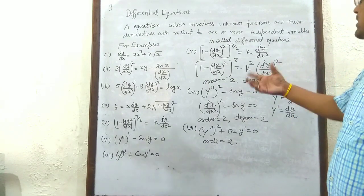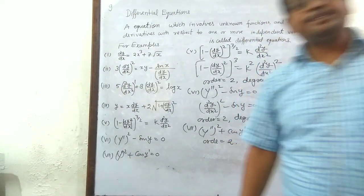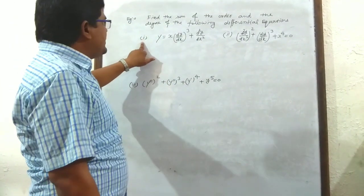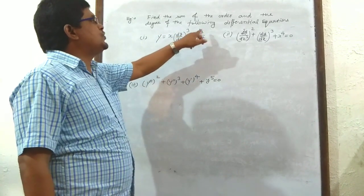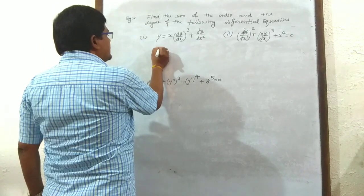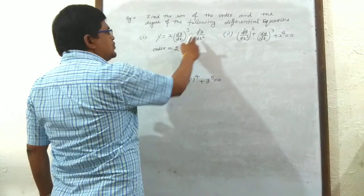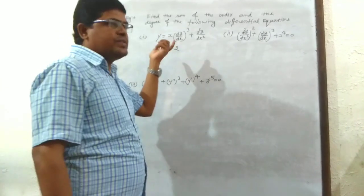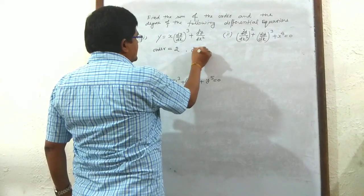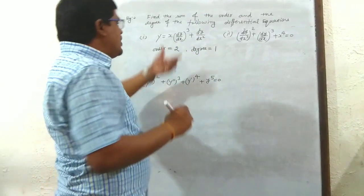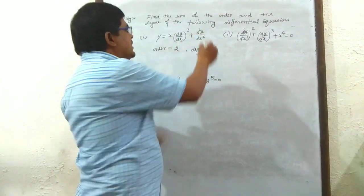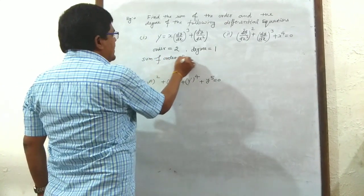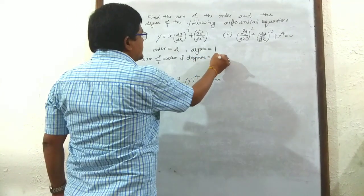So these are the concepts of order and degree of differential equations. Next example: find the sum of the order and degree of the following differential equations. First: y = x(dy/dx)³ + d²y/dx². Order equals 2 because the highest order derivative is d²y/dx², and degree equals 1. Therefore sum of order and degree equals 2 + 1 = 3.